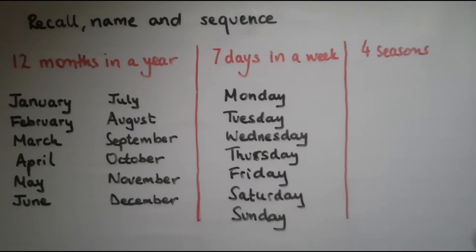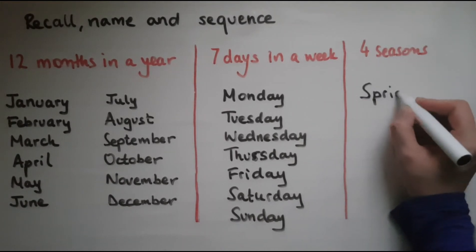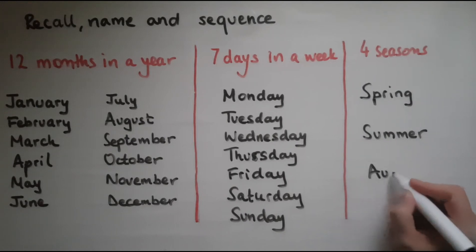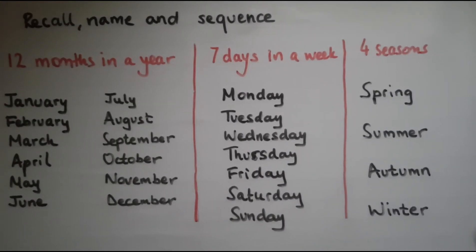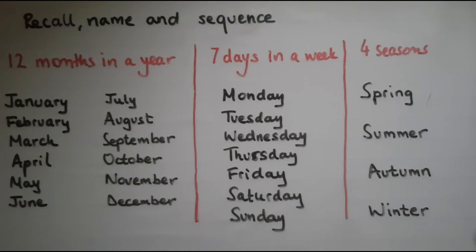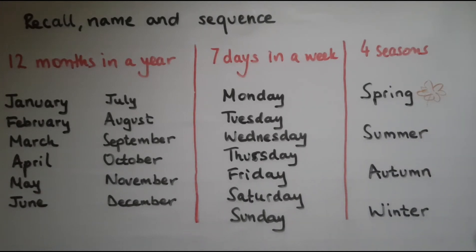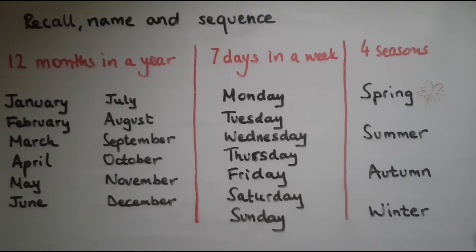In terms of the four seasons, we have four seasons in a year and they are called spring, summer, autumn and winter. In the spring, we have the flowers blossoming and the trees as well. So that's what spring is remembered for. These are typically the months of March, April and May. That's when it's spring.